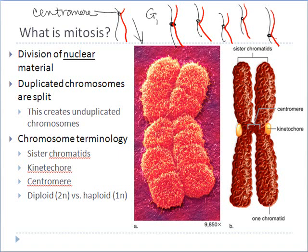When I have a duplicated chromosome — such as what I've just drawn with the black and the red strand — those two individual strands of DNA joined together at the centromere are called sister chromatids. When I have an unduplicated chromosome that does not have a copy attached to it, there are no sister chromatids present. If I'm all alone, I can't be a sister — I can only be a sister if I'm with somebody else. So when I have duplicated chromosomes, I can have sister chromatids; when I do not, I cannot.